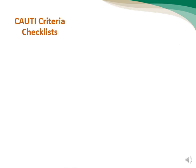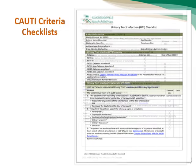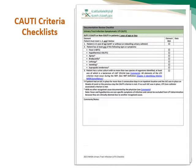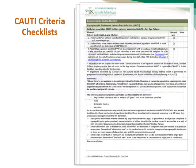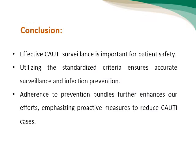Here are the KAUTI criteria checklists simplified, including all three types. As a conclusion, effective KAUTI surveillance is important for patient safety. Utilizing standardized criteria ensures accurate surveillance and infection prevention. Adherence to prevention bundles further enhances our efforts, emphasizing proactive measures to reduce KAUTI cases.